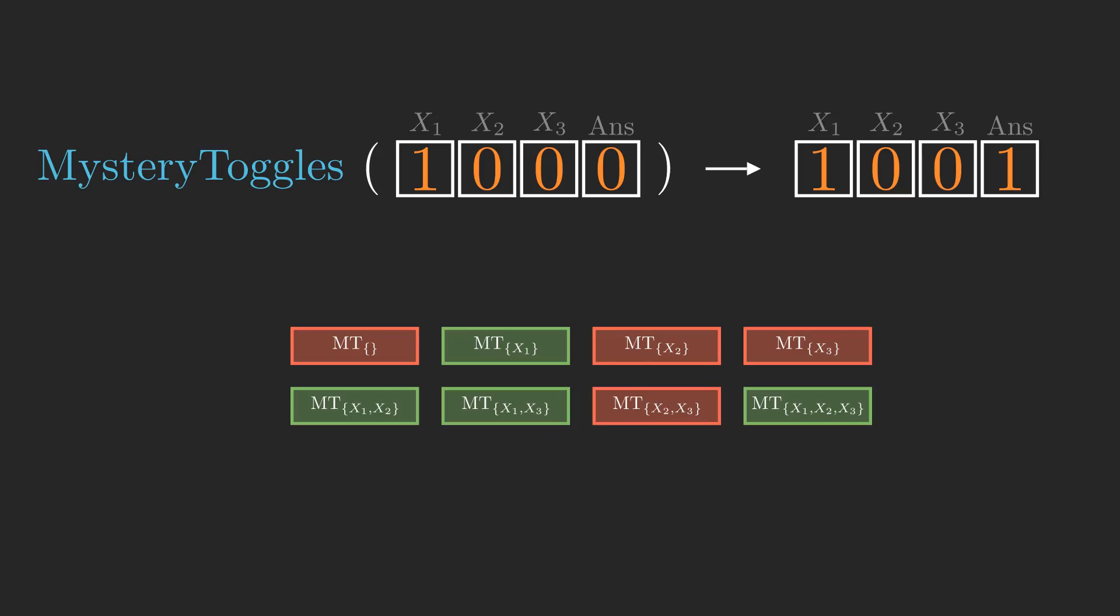That eliminates these possibilities, and note that we can ignore the first three bits of the output, since they don't change when we call mystery toggles.